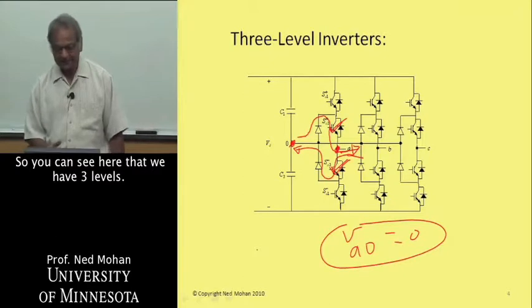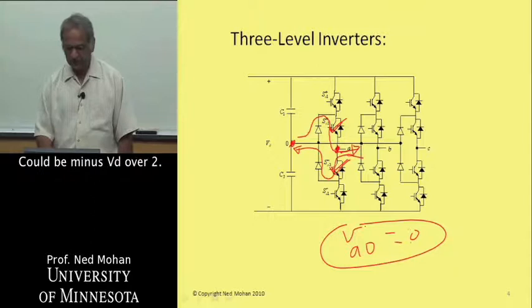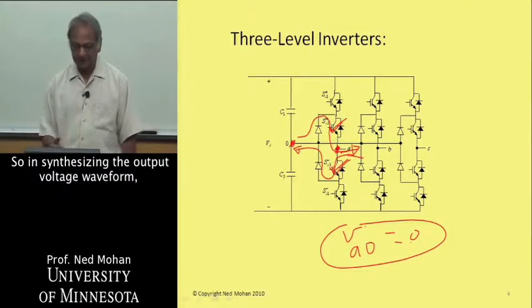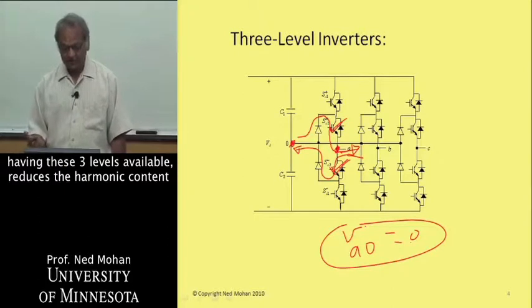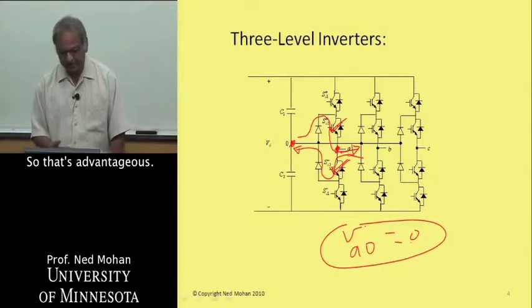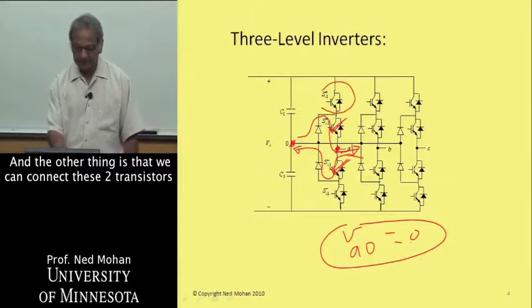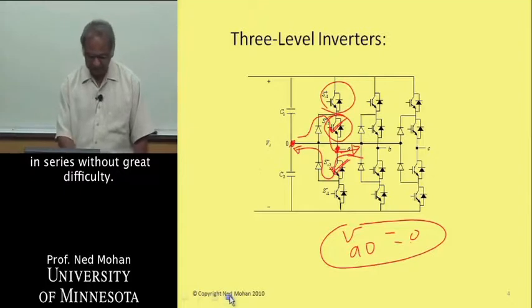So you can see here that we have three levels. This could be 0, could be VD over 2, could be minus VD over 2. In synthesizing the output voltage waveform, which we desire to be in most cases sinusoidal, having these three levels available reduces the harmonic content in the output voltage. That's advantageous. And the other thing is that we can connect these two transistors in series without great difficulty.